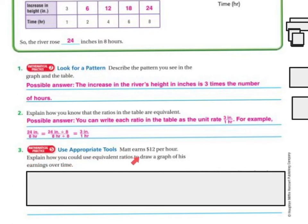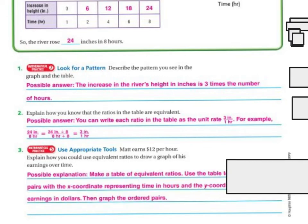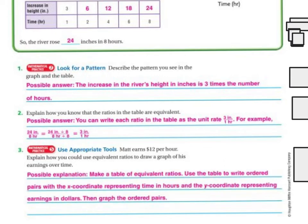Use appropriate tools. Matt earns $12 per hour. To draw a graph of his earnings over time using equivalent ratios, you would make a table of equivalent ratios, then write ordered pairs with the x-coordinate representing time in hours and the y-coordinate representing earnings in dollars, and then graph those ordered pairs.